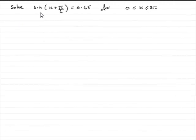Now we have to solve the equation sine of x plus pi upon 6 equals 0.65, for x greater than or equal to 0 radians, but less than or equal to 2 pi radians. So how do we do this?